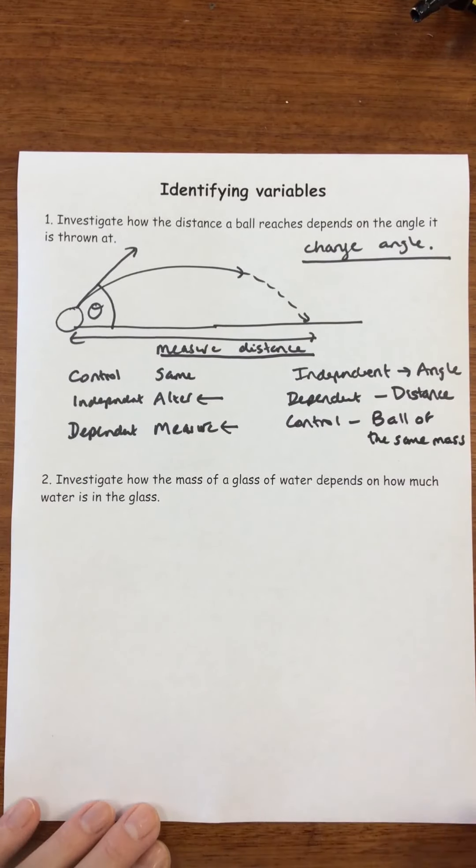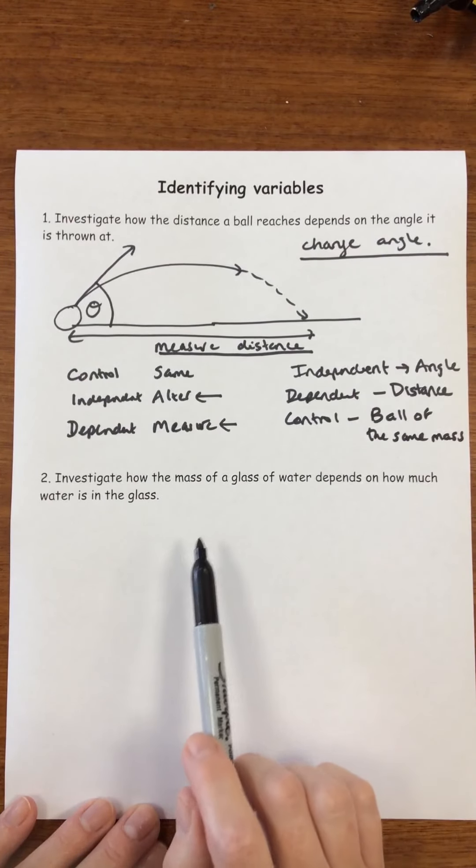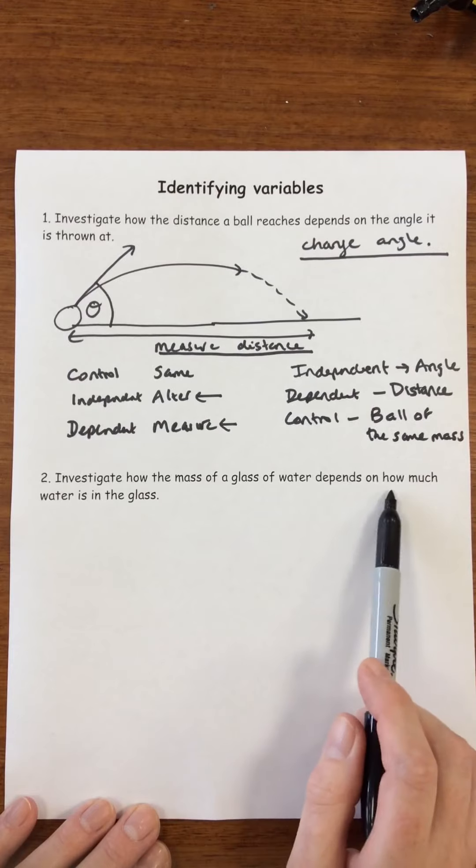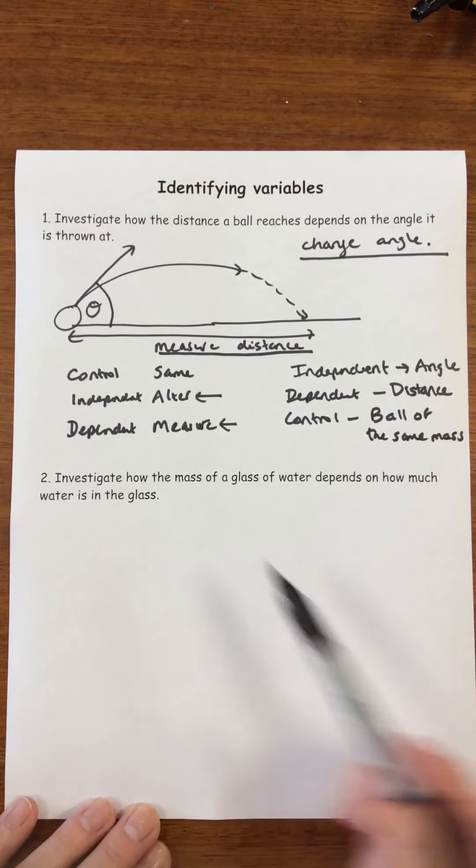Okay, let's do another example. Our second investigation says investigate how the mass of a glass of water depends on how much water is in the glass.